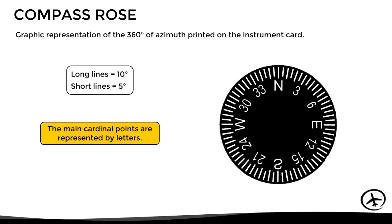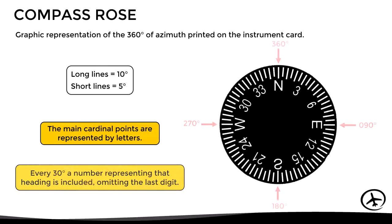The main cardinal directions are represented by their corresponding letters. The letter N (north) corresponds to heading 360, E (east) represents heading 090, S represents heading 180, and W represents heading 270. Every 30 degrees, a number representing that heading is included, omitting the last digit. For example, the number 3 represents heading 030, the number 15 represents heading 150, and the number 30 represents heading 300.